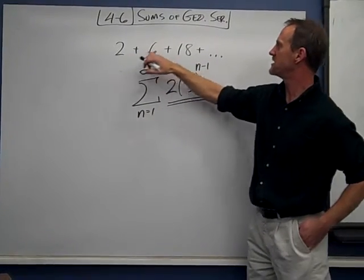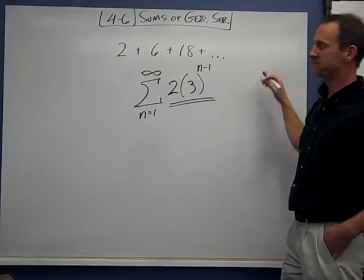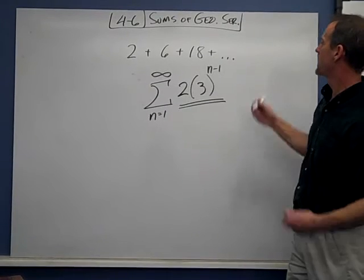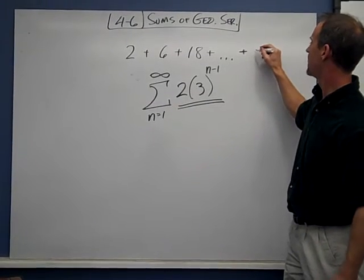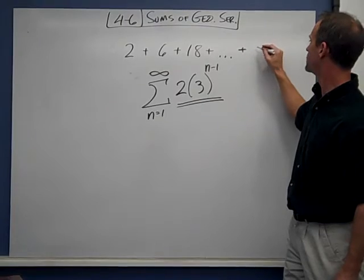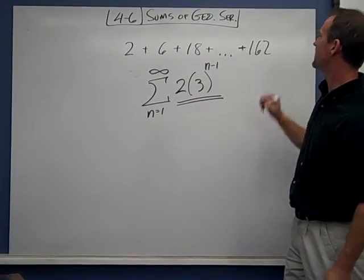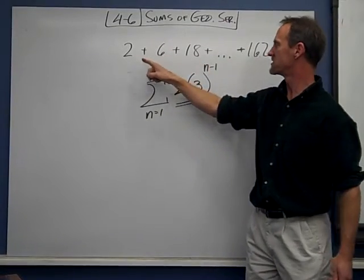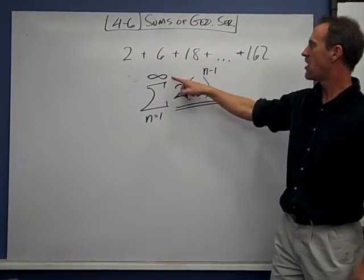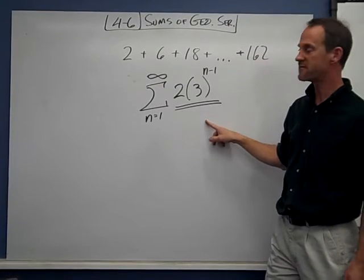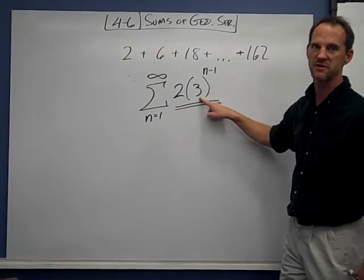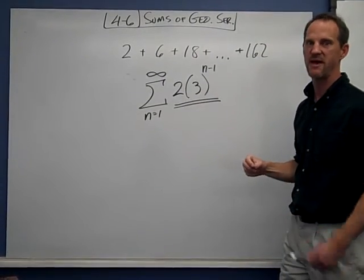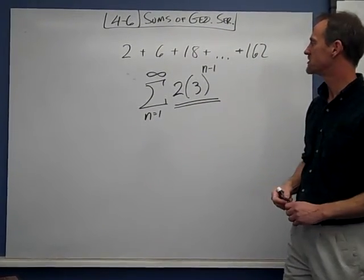We can only add these up and get an actual answer if two things are true. Either it has to stop, there has to be an ending point. Like if it ended at 162, we can say this stops, and we can add up all the numbers from the beginning to the end. Or else, if it goes on forever, this multiplier here must be less than 1. If you need to stop this and write that down, do so, because that's really important, the two conditions.